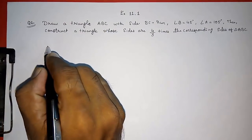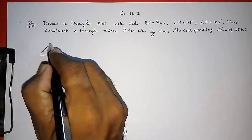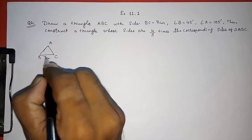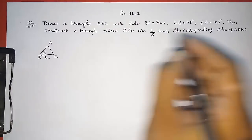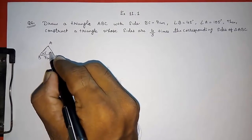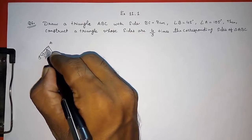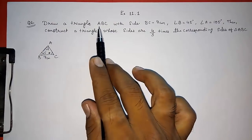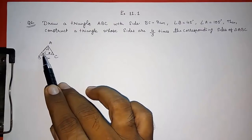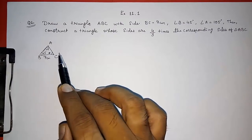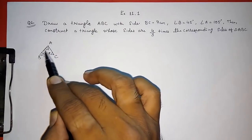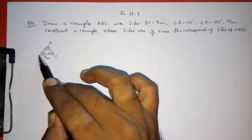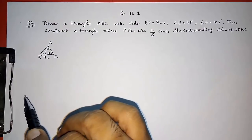First we have to draw a triangle — I am drawing a rough figure. A triangle ABC with BC 7 centimeter, angle B 45 degree, and angle A 105 degree. For this we cannot directly draw triangle ABC. Why? Because when we are having two angles, the third thing we need is the side between those two angles — meaning side AB — and only then can we draw this triangle.